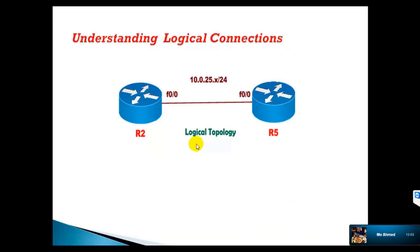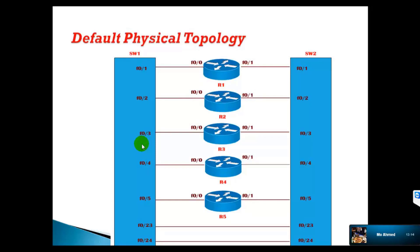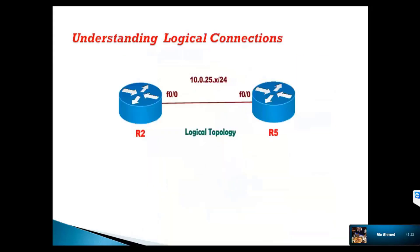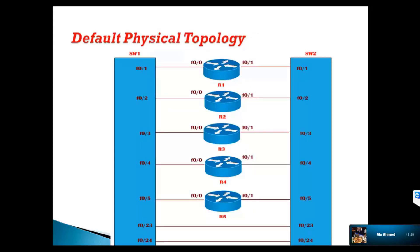First we will try to understand the logical topology of router 1 and router 2 connecting to router 5. Now if you see the default physical topology, there is no direct connection between router 2 and router 5. But if you see the logical diagram, it represents that router 2 is having a connection to router 5. As per our physical topology, there is no direct physical connection between router 2 and router 5, yet we are saying these two devices are connected.